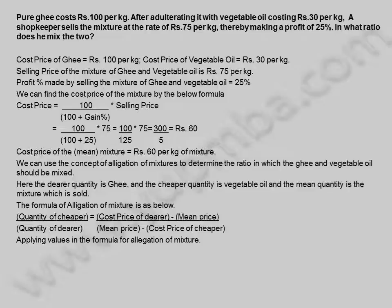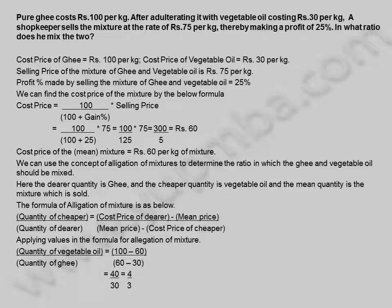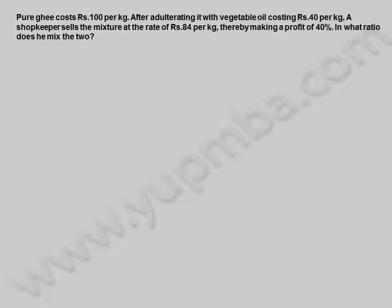Applying values: quantity of vegetable oil / quantity of ghee = (100 − 60) / (60 − 30) = 40 / 30 = 4 / 3. The ratio of vegetable oil to ghee in the mixture is 4:3.